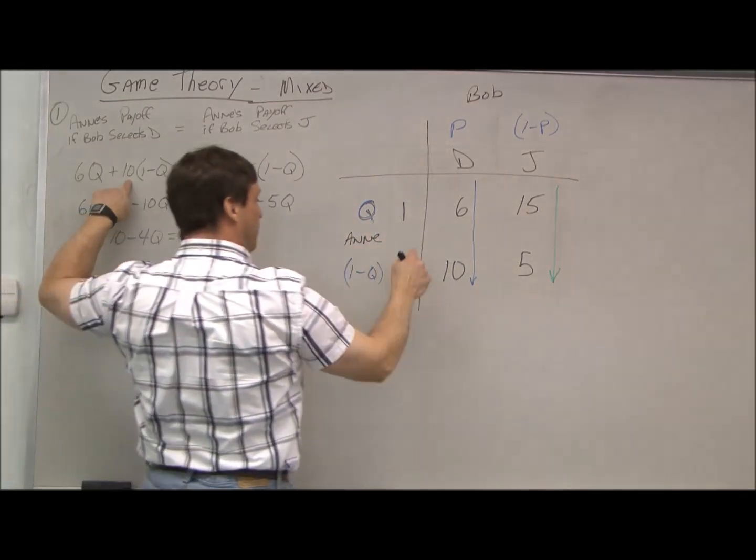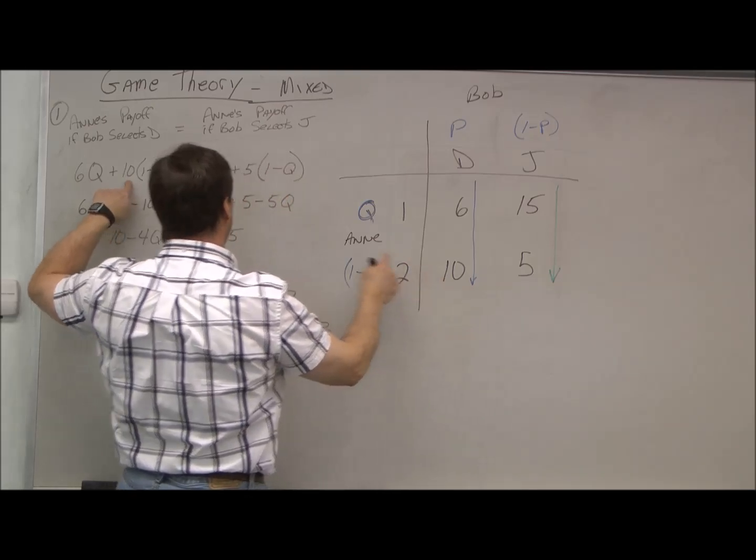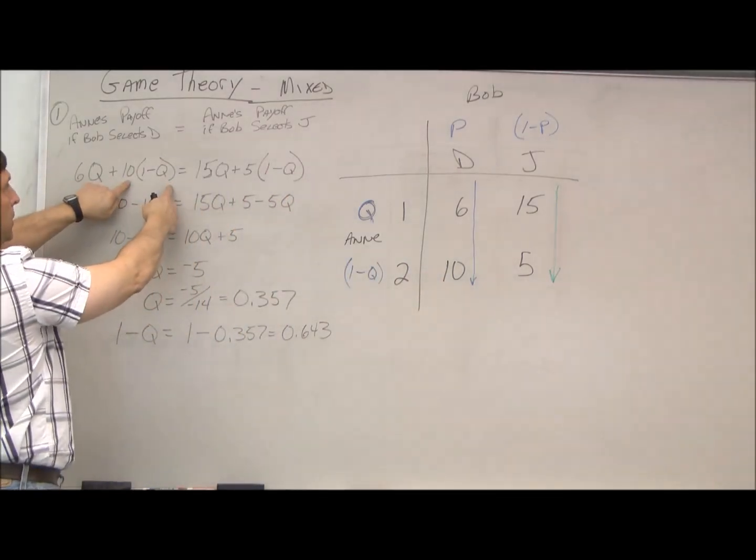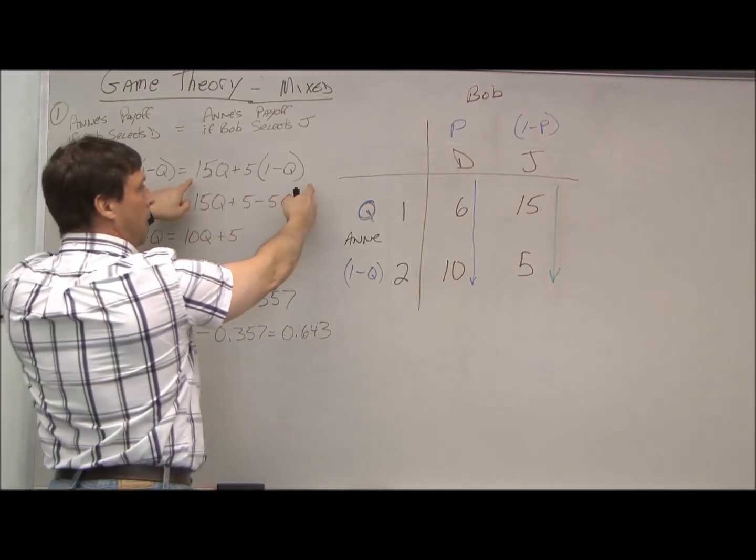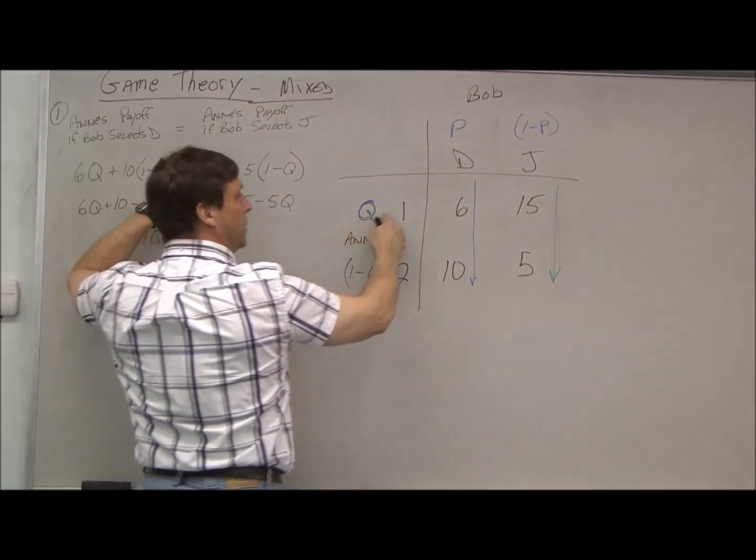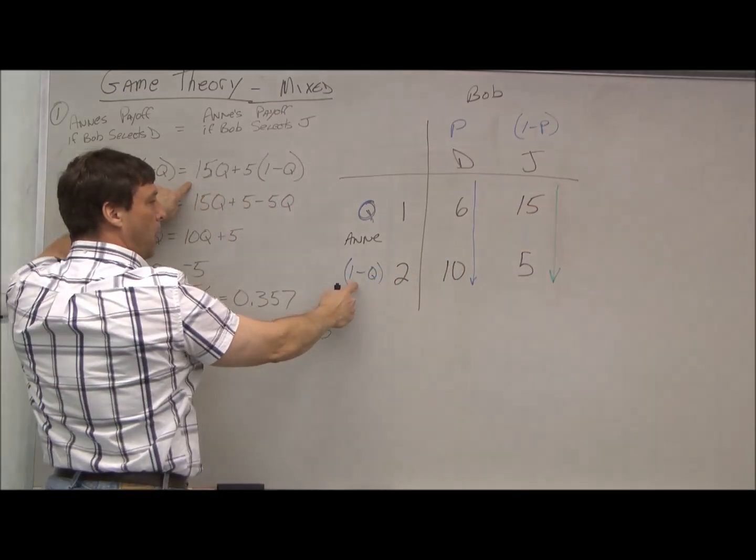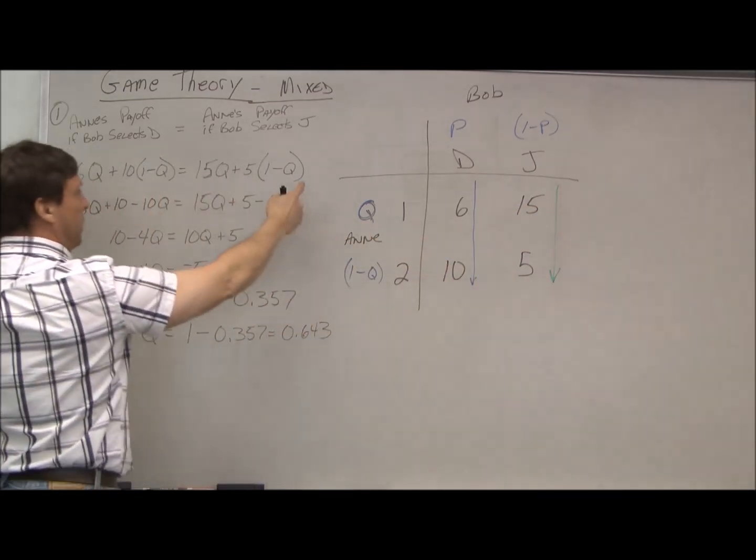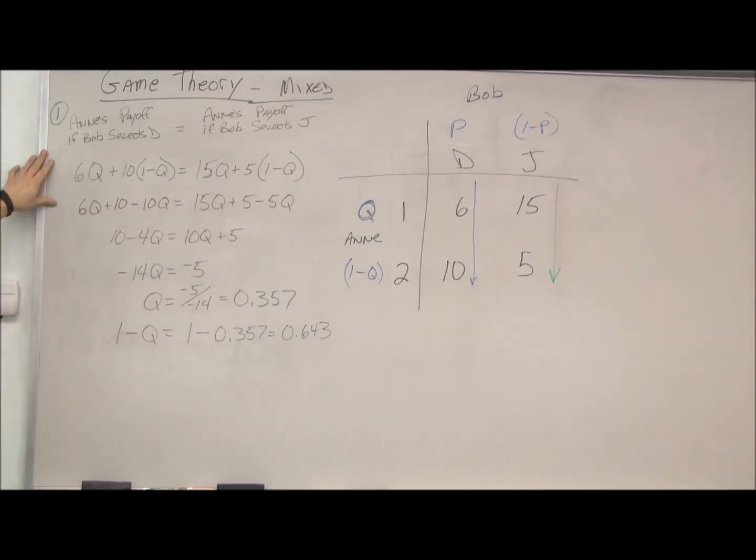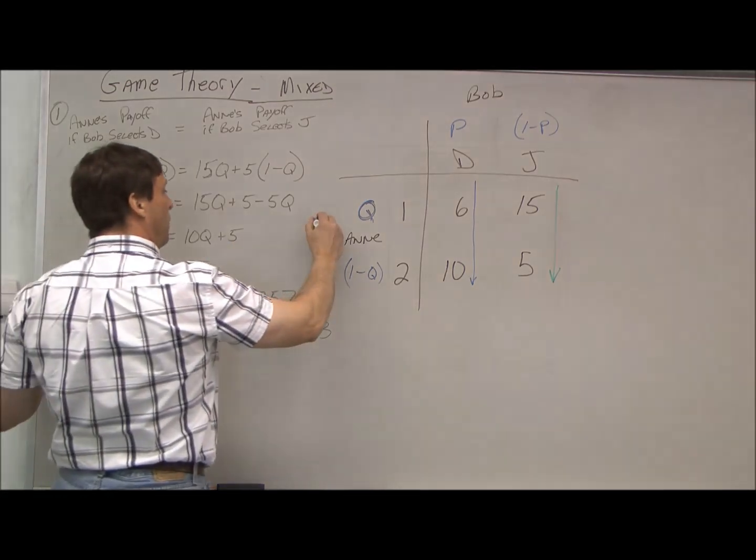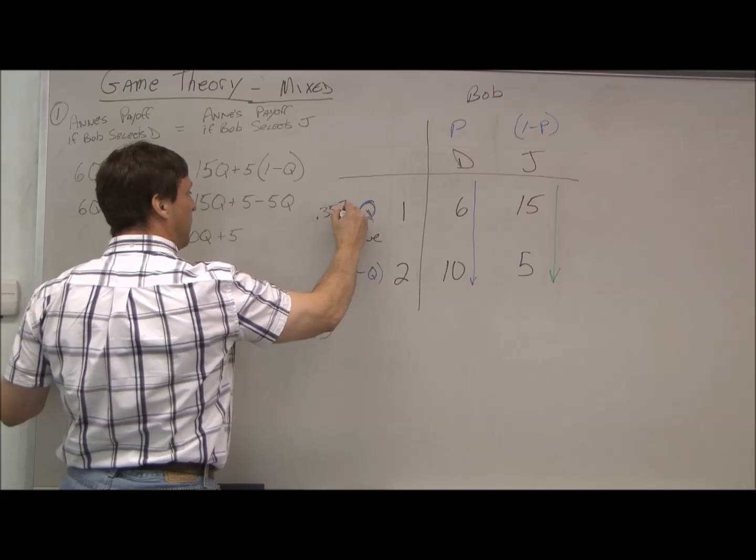So we do q times 6 plus one minus q times 10. That's if Bob selects D. Now if Bob selects J, it's q times 15 plus one minus q times 5. So that's how I set up the equation. Then I just solve for q. Multiply the 10 and the 5 through, bring the 10 over to one side, the q over to the other, solve for q.